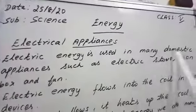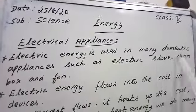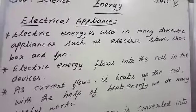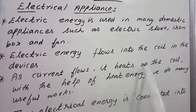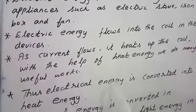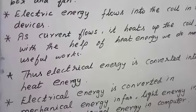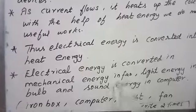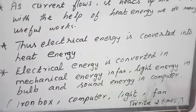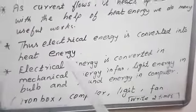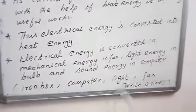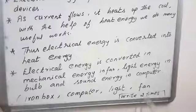Electric energy is used in many domestic appliances such as electric stove, iron box, and fan. Electric energy flows into the coil in the devices; as current flows in it, it heats up the coil. With the help of heat energy, we do many useful works. Thus, electric energy is converted into heat energy, mechanical energy in the fan, light energy in the bulb, and sound energy in the computer. Write it two times in your rough note. Thank you, children.